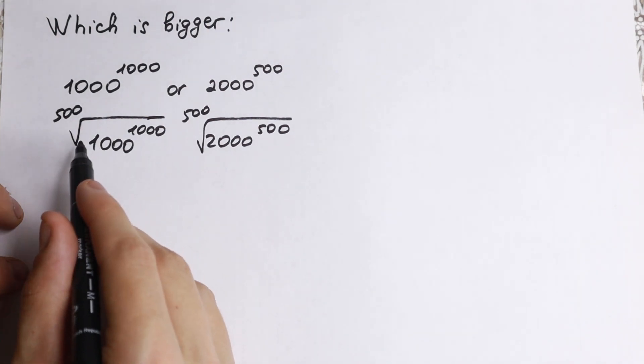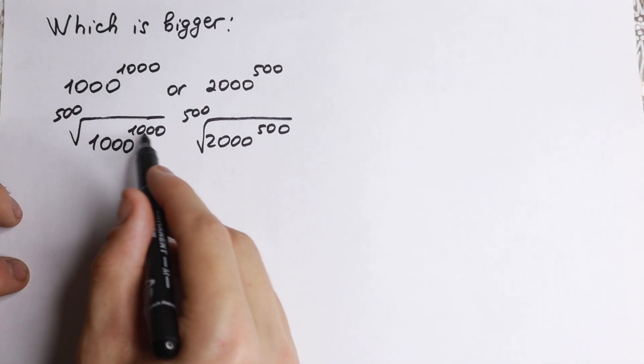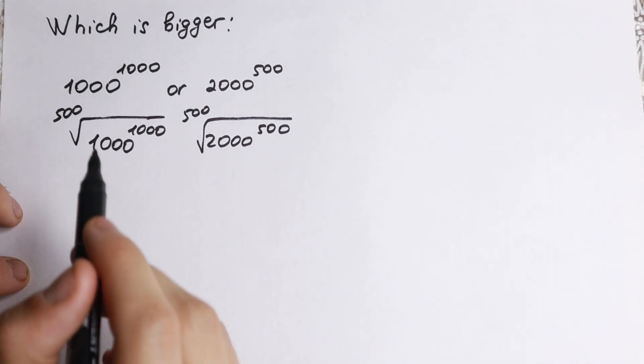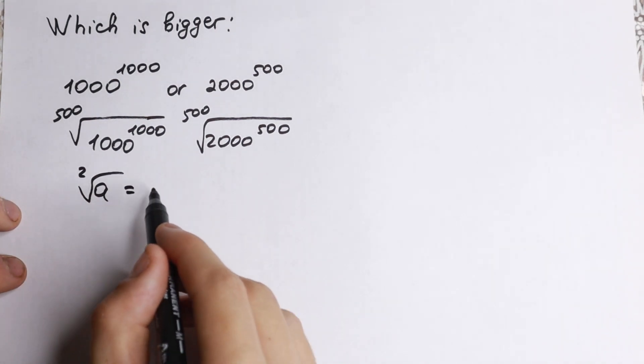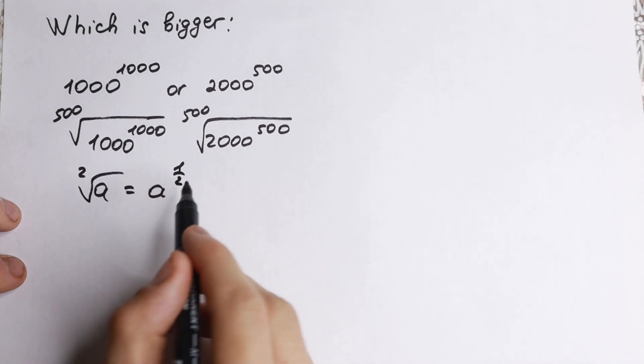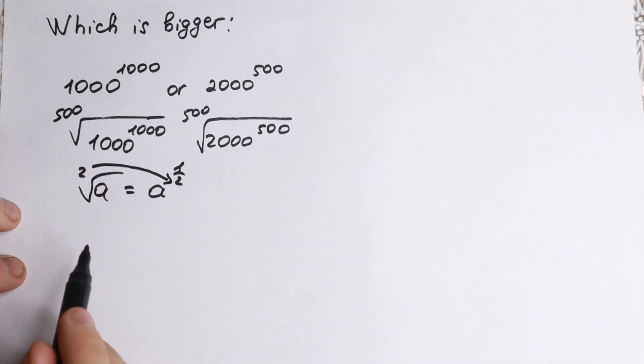So if we take these roots from the left hand side, we just need to divide our power of this 1000 by this one. Because if we have, for example, square root of a, we can write it as a to the power one half. So this power goes as our denominator.